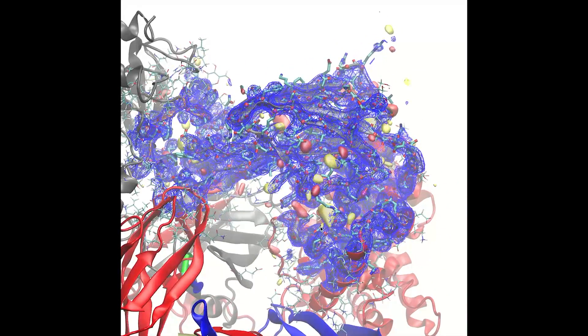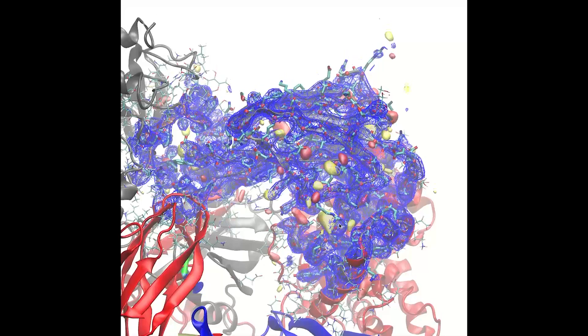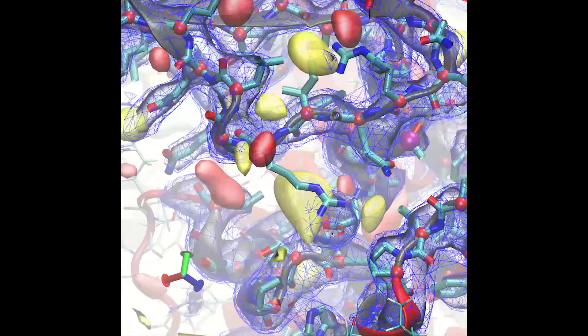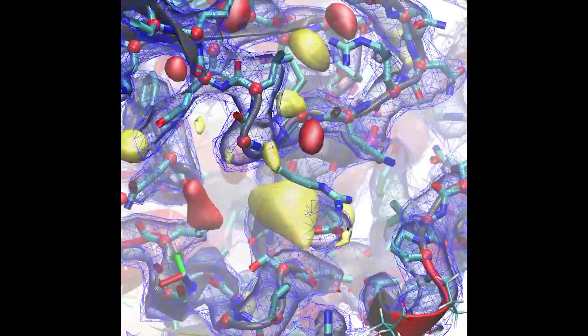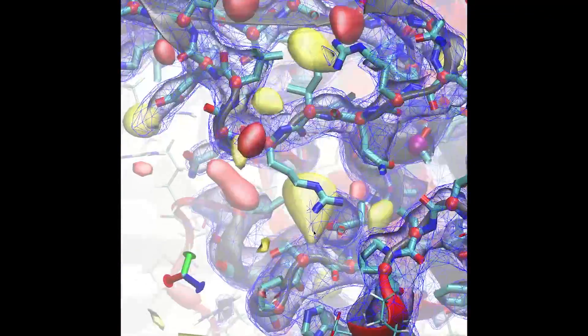I'm focusing on the CUB domain, where four beta strands are out of register. I'm starting from the original coordinates and maps generated after recalculating a simplified TLS only B-factor model.